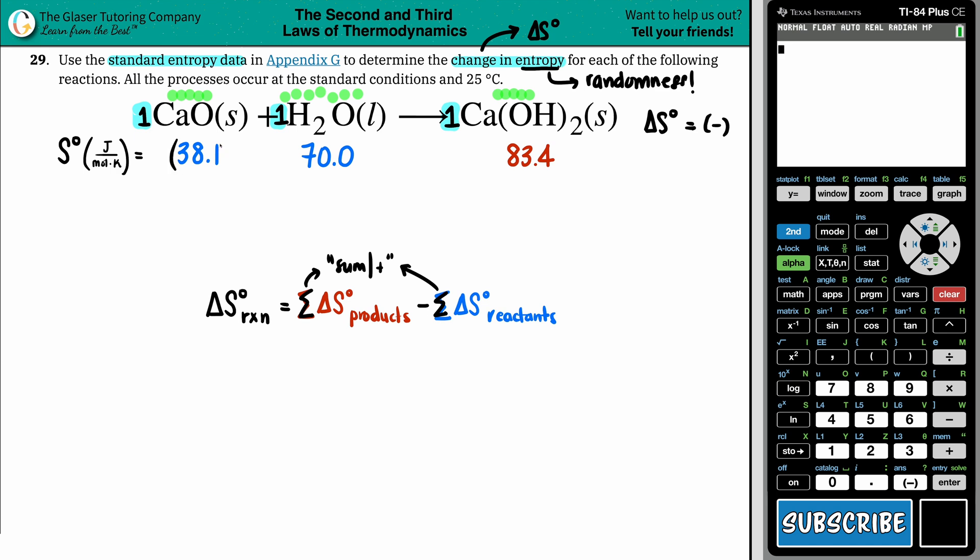So for each one of these, technically, we would times by one. But times by one is the same thing. But just to kind of have a system in place, that's what you would do. If you had like two H2Os, you take your 70 and times it by two.